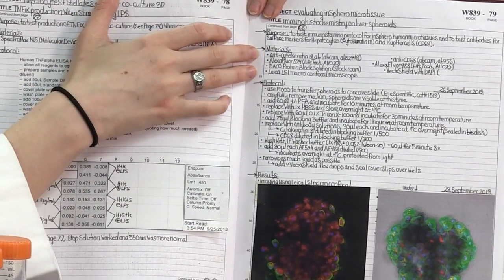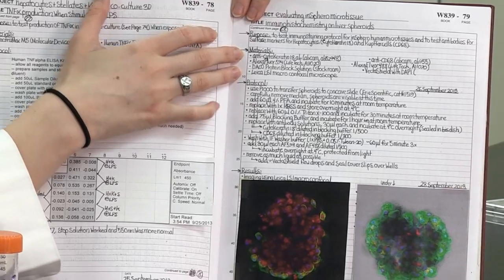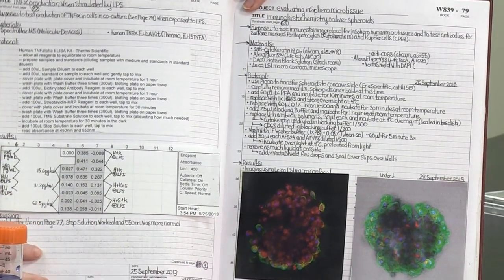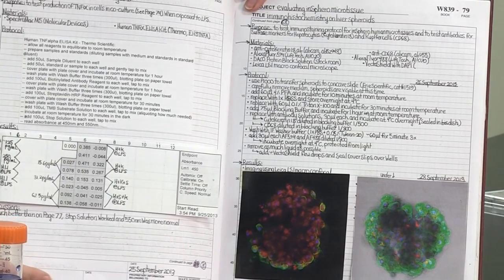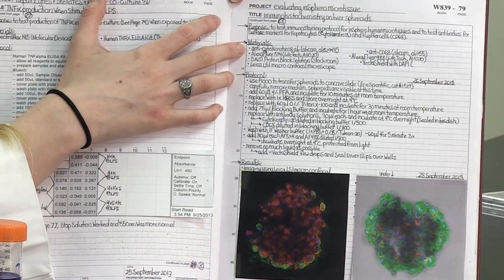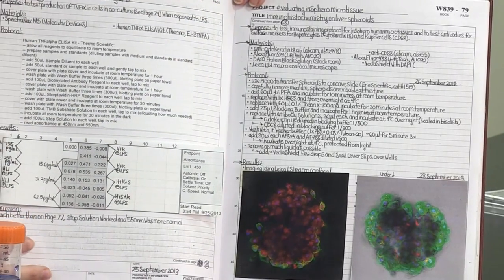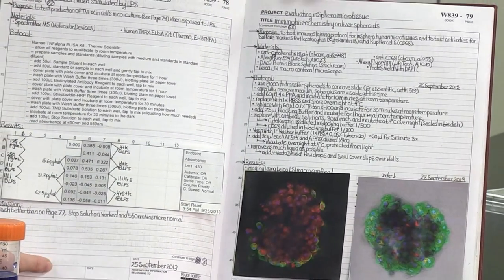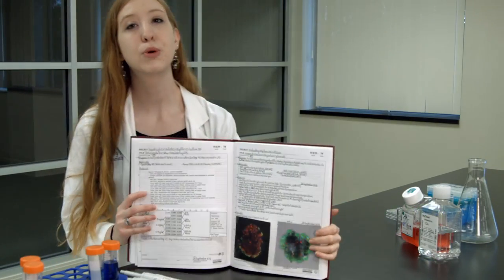It's also really important to note down which materials you use because oftentimes there are hundreds of different medias you can pick and choose from and hundreds of different antibodies. So it's really helpful to have the name of whatever you're using as well as catalog numbers and lot numbers. That can save you a lot of time later on.